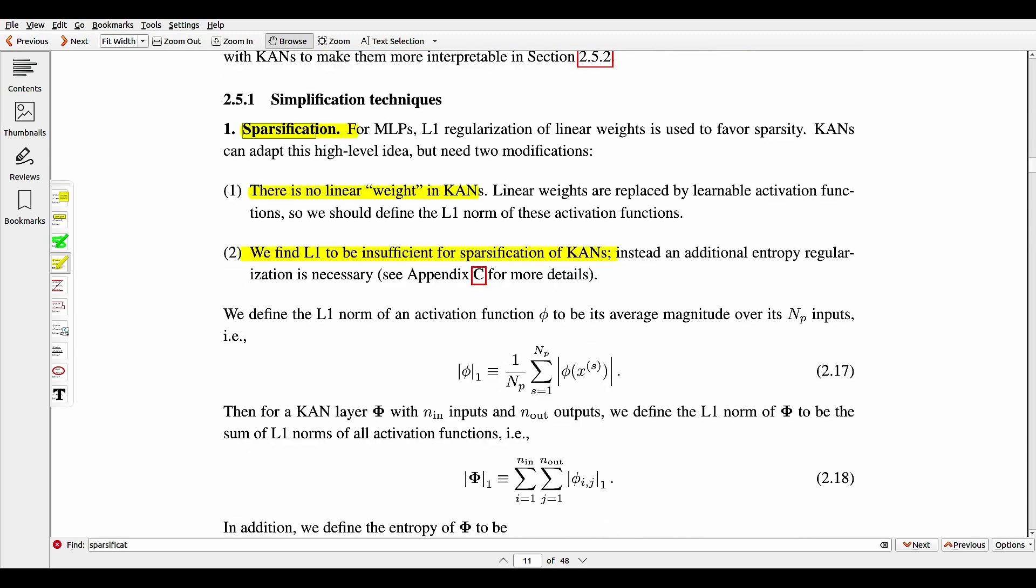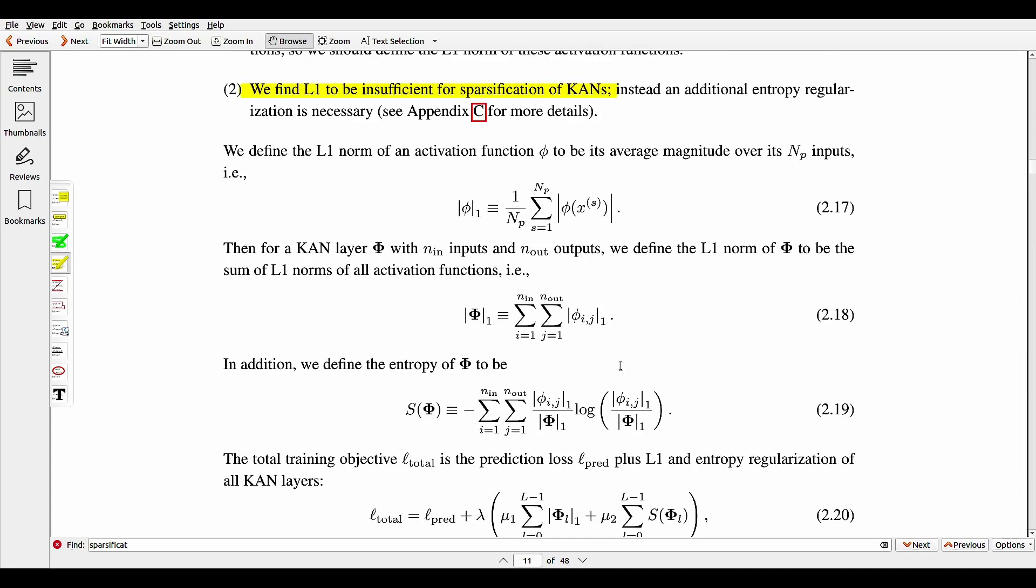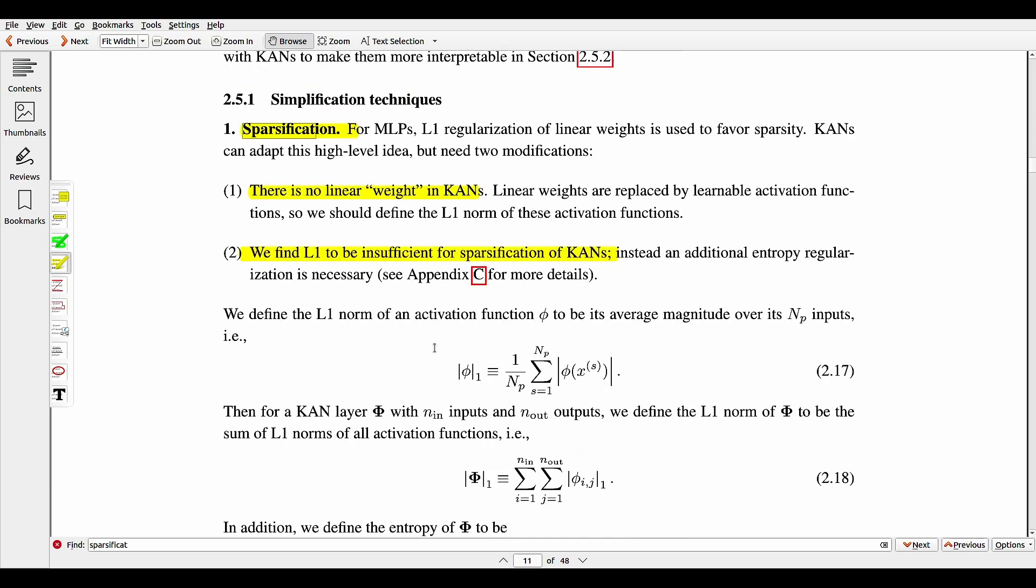On the interpretability of CANs, that is highlighted through techniques like sparsification, pruning, and symbolic simplification of the learned splines. On real world applications in knot theory and condensed matter physics, CANs are able to uncover known relations and phase transitions in a transparent manner with the potential for scientific discovery through human-AI collaboration using the language of CANs. And that's really a massive advantage of CANs. Overall, CAN provides a very powerful and interpretable alternative to MLPs by leveraging the Kolmogorov-Arnold theorem and spline approximations, demonstrating state-of-the-art performance on a range of tasks.